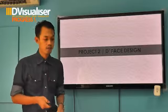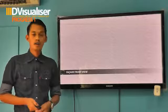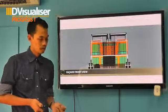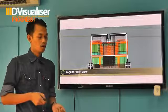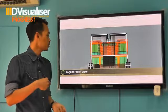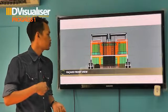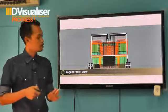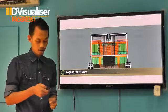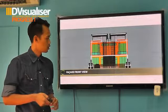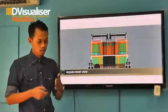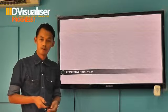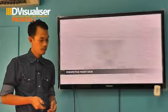We will go to Project 2, the facade design. This is a direction for the facade front view for the facade design. There are a lot of colors to support the roof. This is a lab for more house design in Asia, like a developer who takes the shading device to address the sun orientation. This is a perspective view for the facade design.